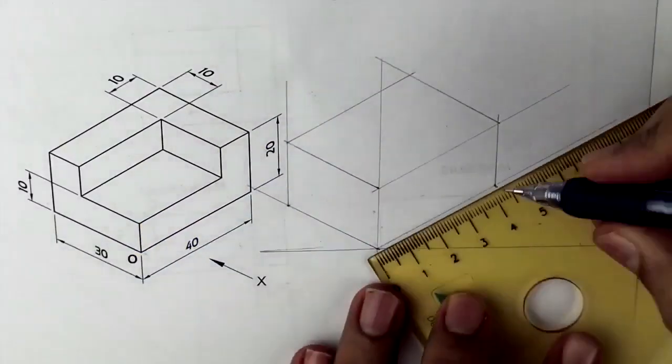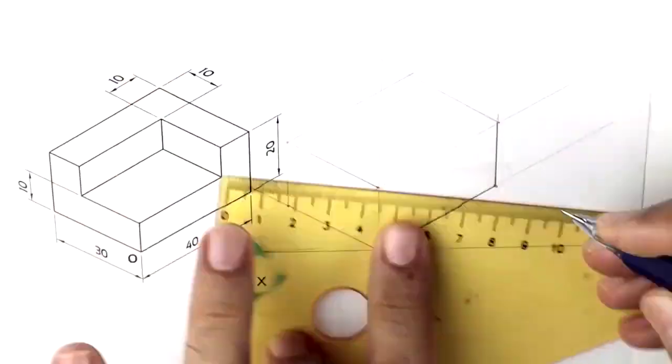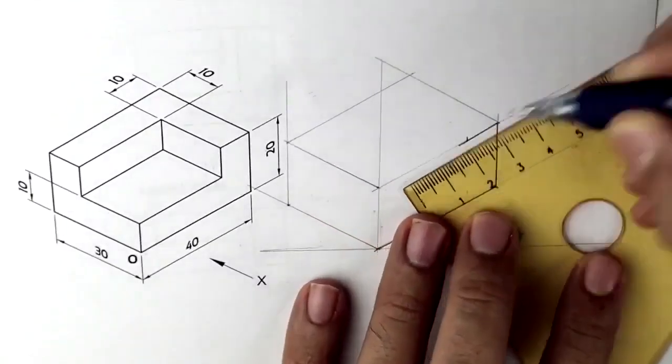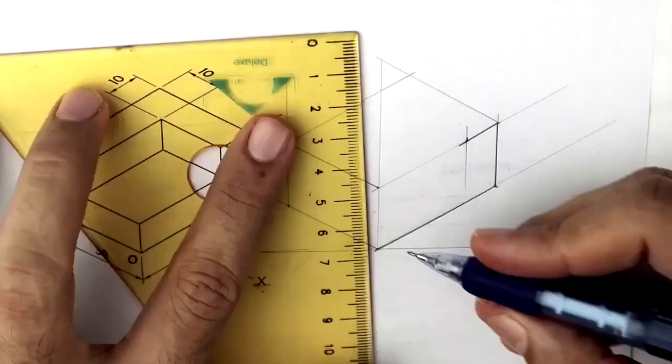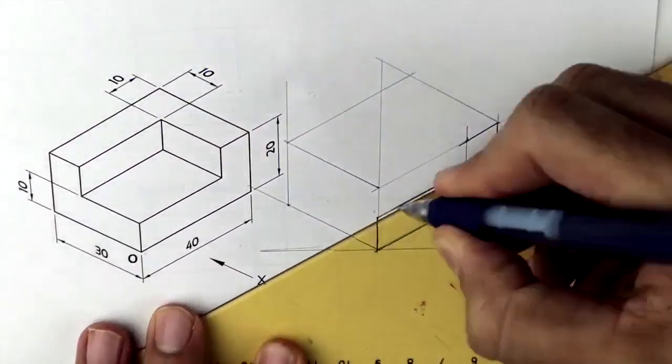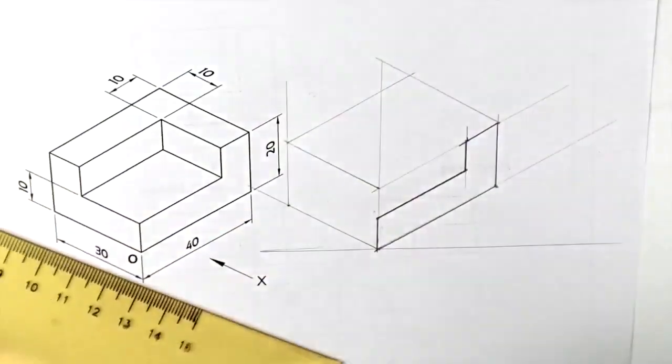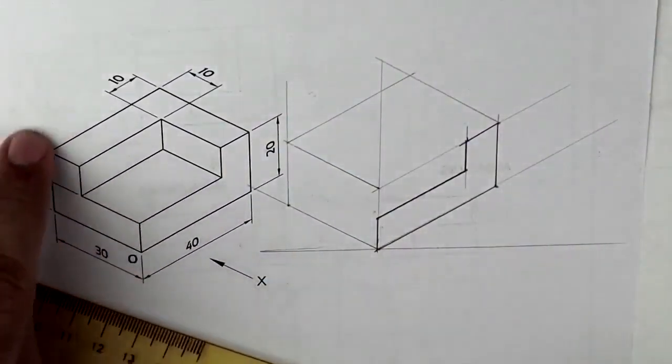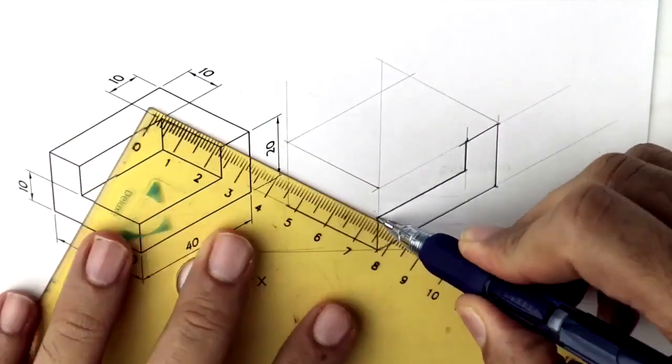So first I will draw that. This is 10, go down by 10, up by 10, and draw this L shape. After that we'll see inside view also. If you see, it is there inside also, same part L shape.